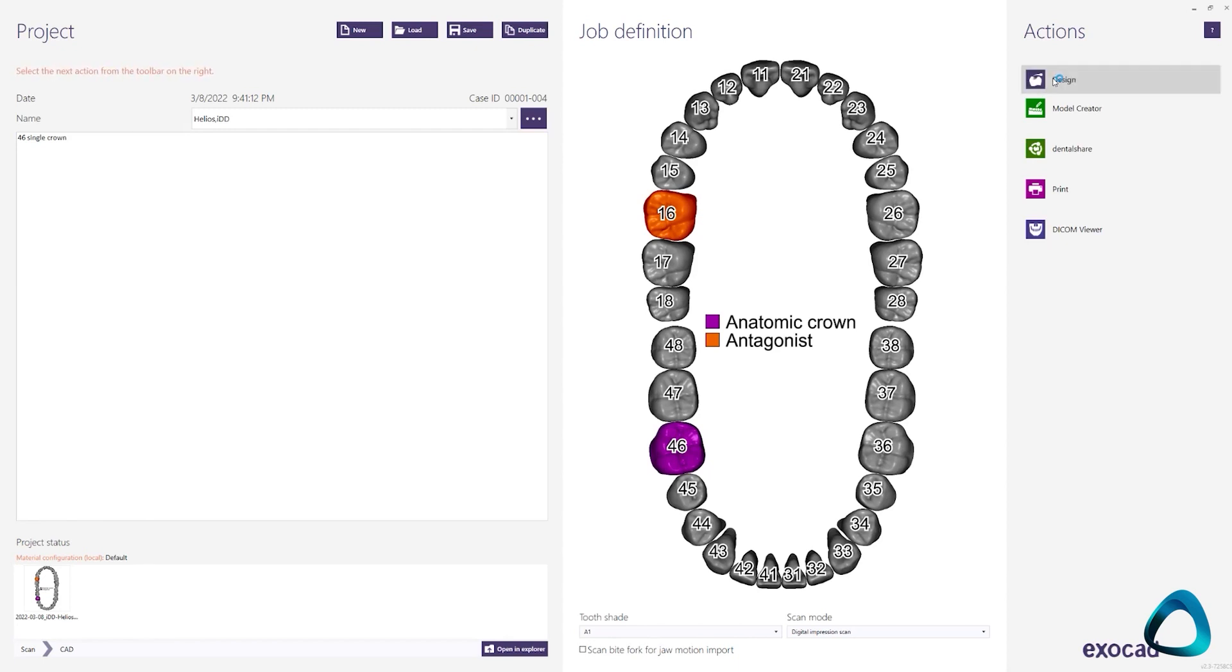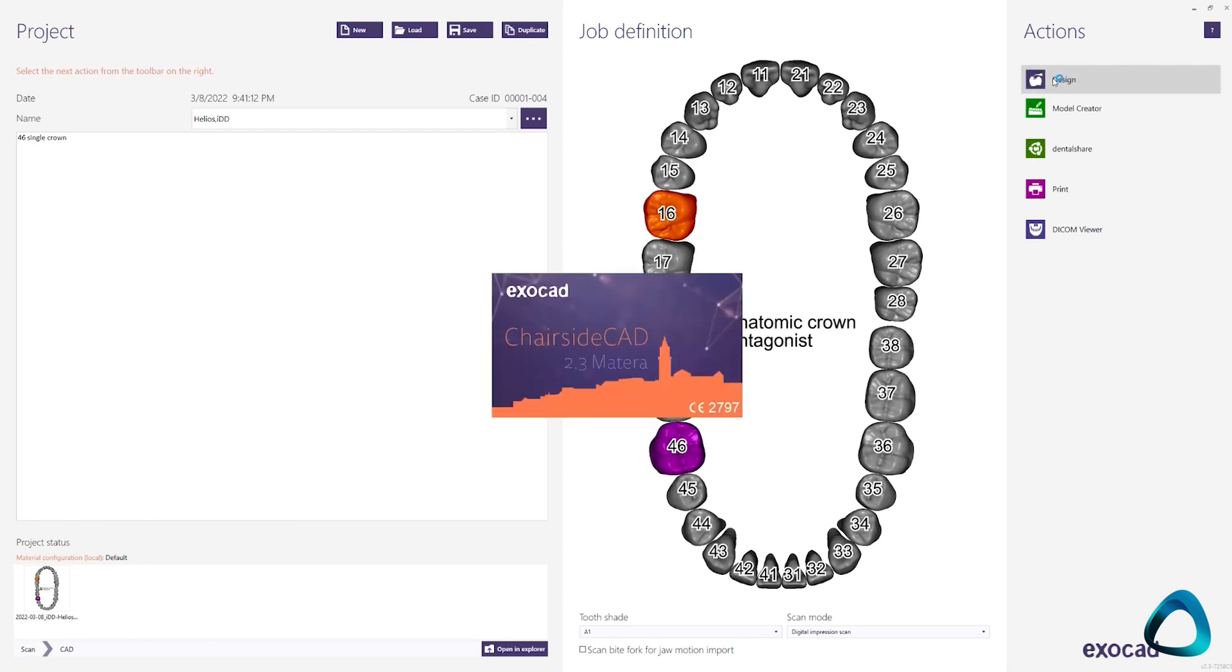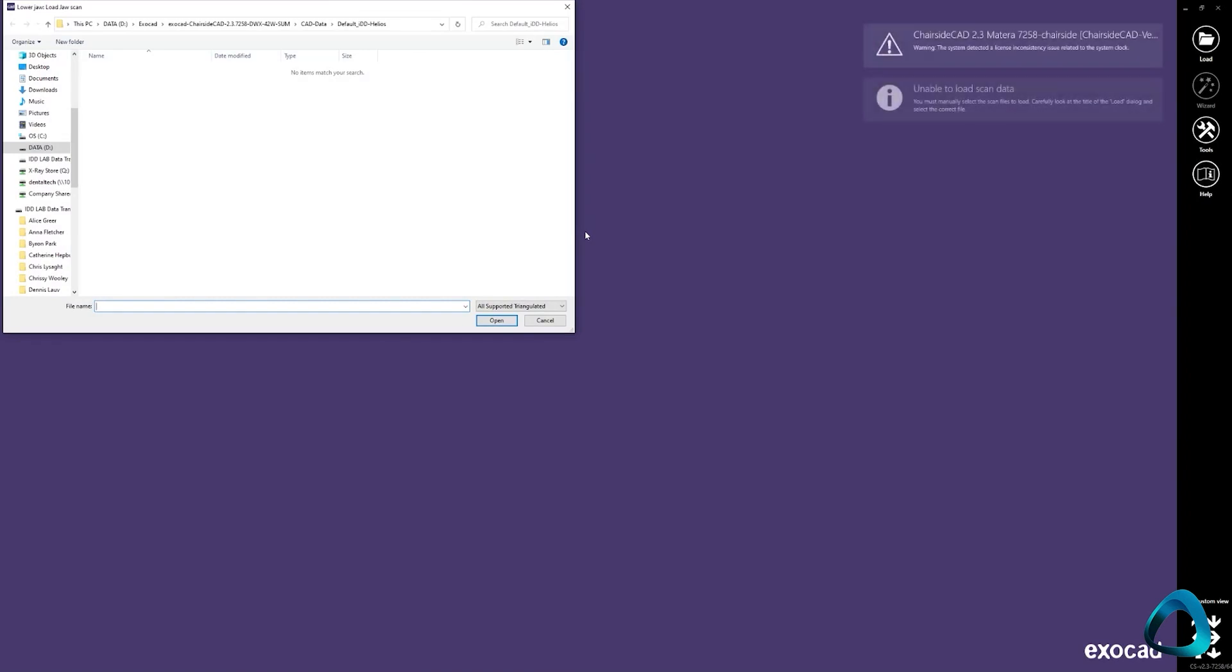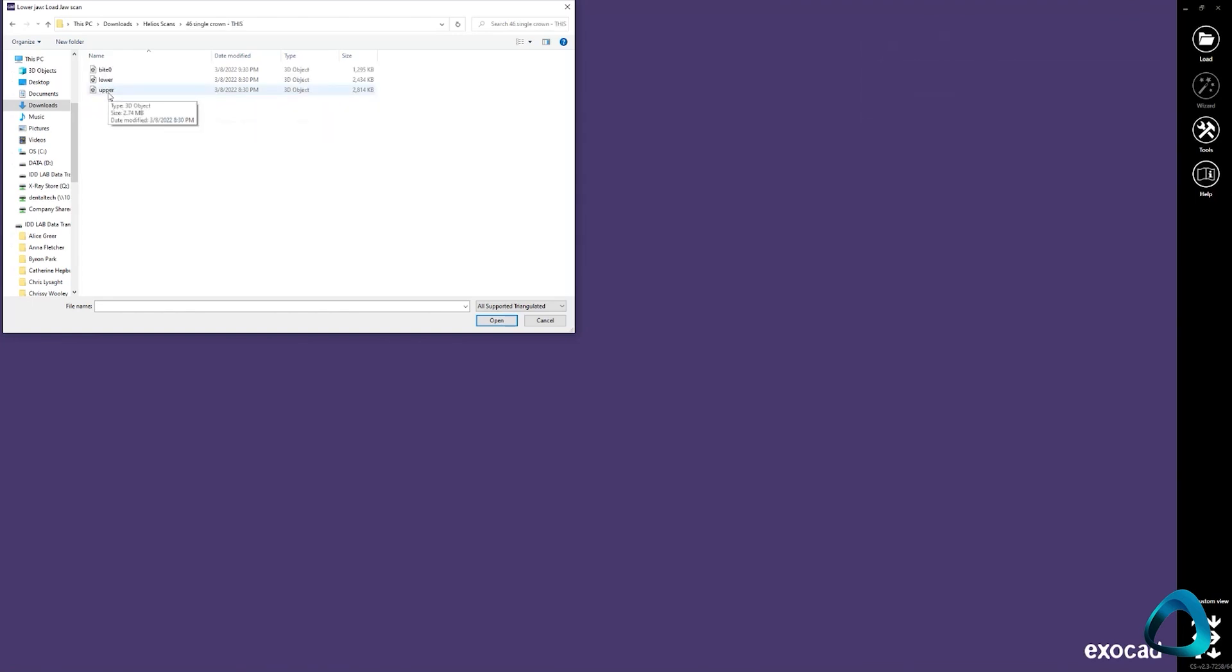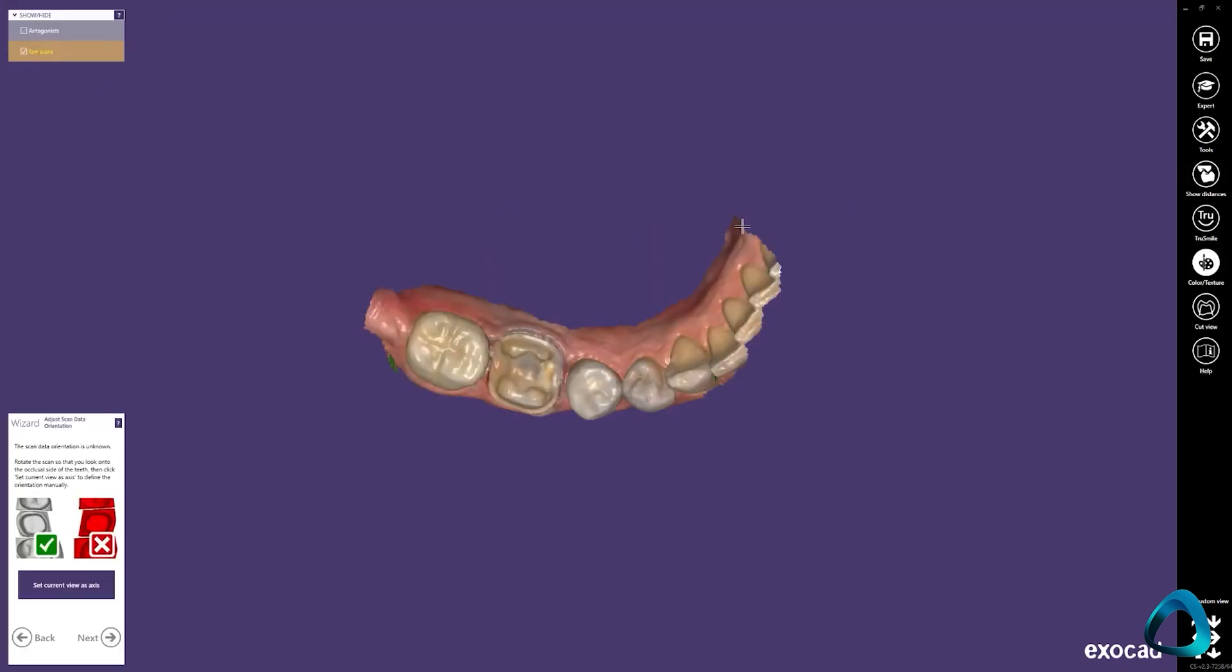Second, you import your scans. The Helios 600 scanner enables easy exporting of STL and PLY scans. I suggest using the PLY file type when you can because this is a color file and it can be easier to identify the tooth margins when the models are in color. However, both STL and PLY work fine. So as you can see, I'm importing the scans and then the next part of the workflow is orientating the scans as per the instructions on the software.